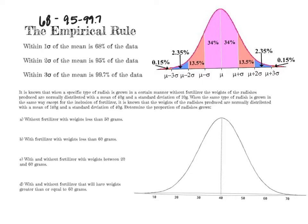Within one standard deviation of the mean is always going to be 68 percent of the data. Because the curve is symmetric, if 68 percent sits in the middle, that means 34 percent is to the left — one standard deviation — and 34 percent is to the right, or one positive standard deviation away.